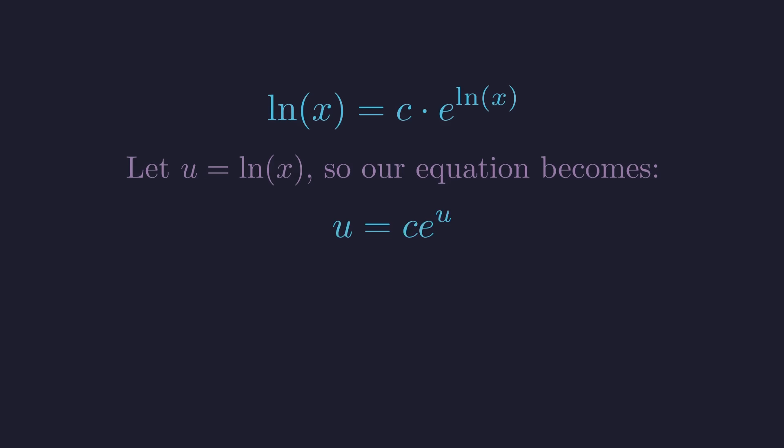Beautiful! Now we have u equals c times e to the power of u. This is almost in Lambert W form, but we need to get it into the exact form, something times e to the something equals constant. To get the standard Lambert W form, we rearrange to isolate the exponential term, then multiply both sides by negative c.